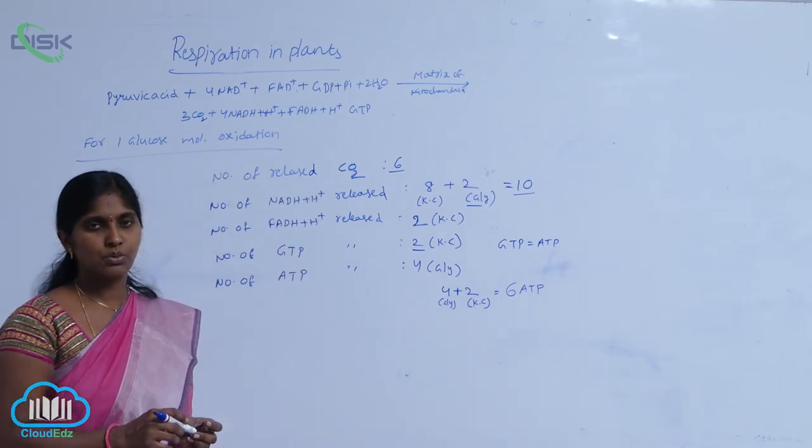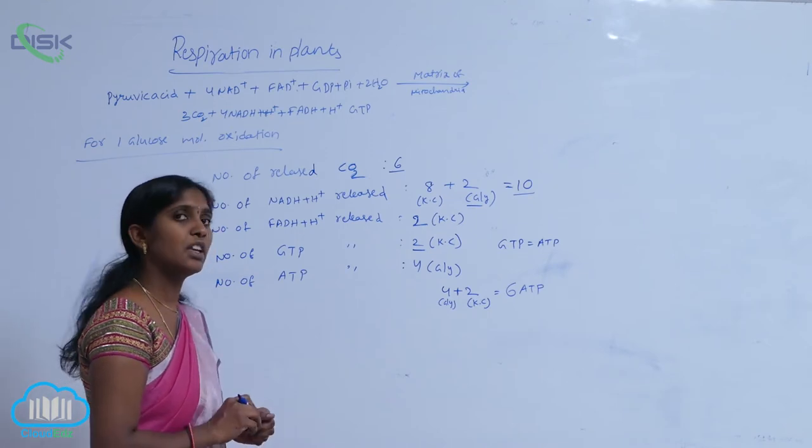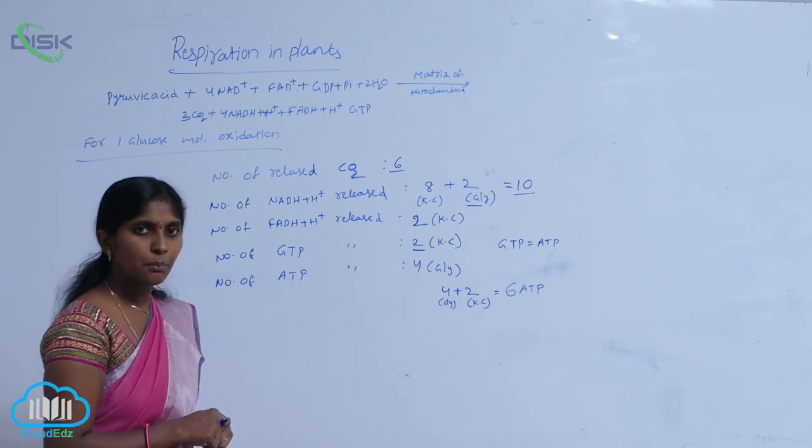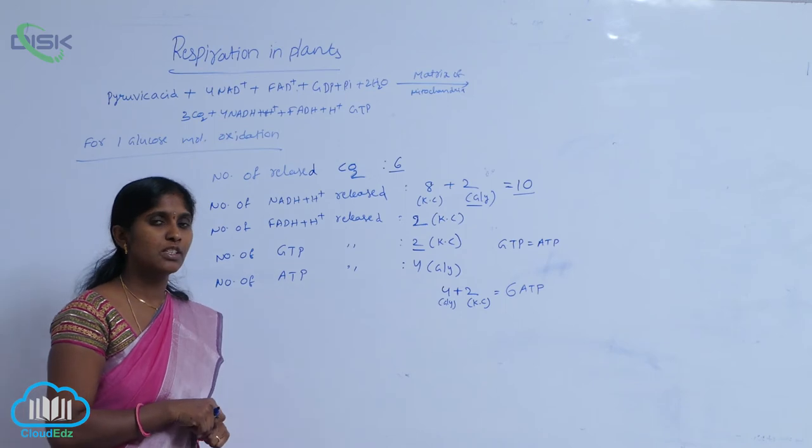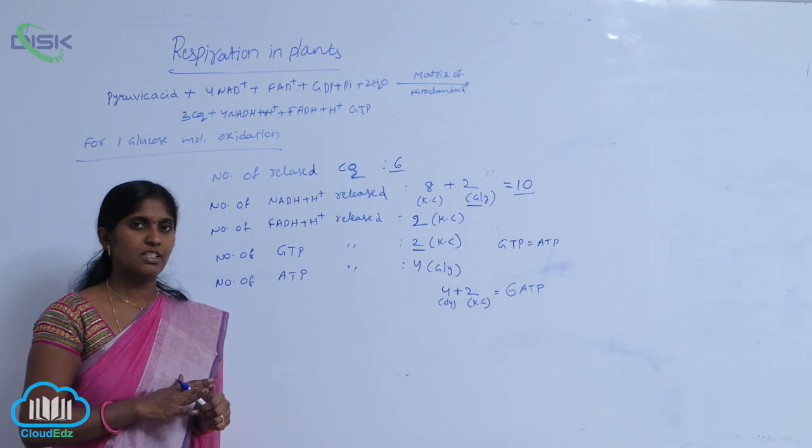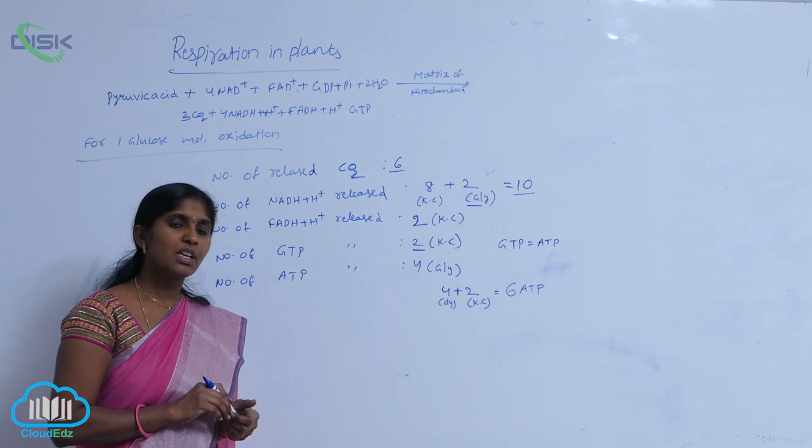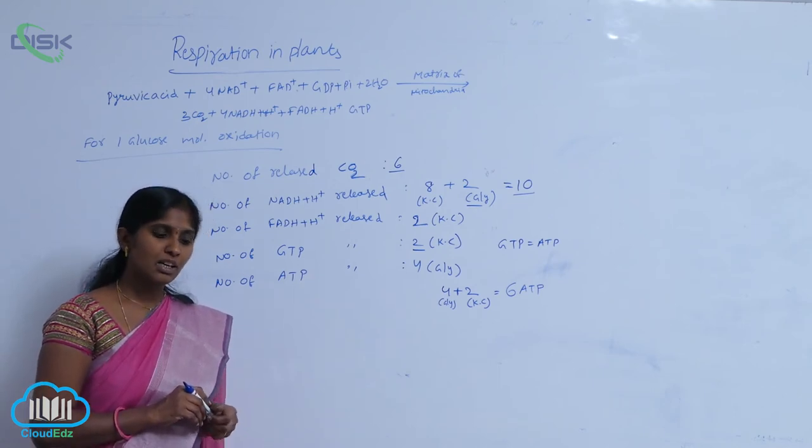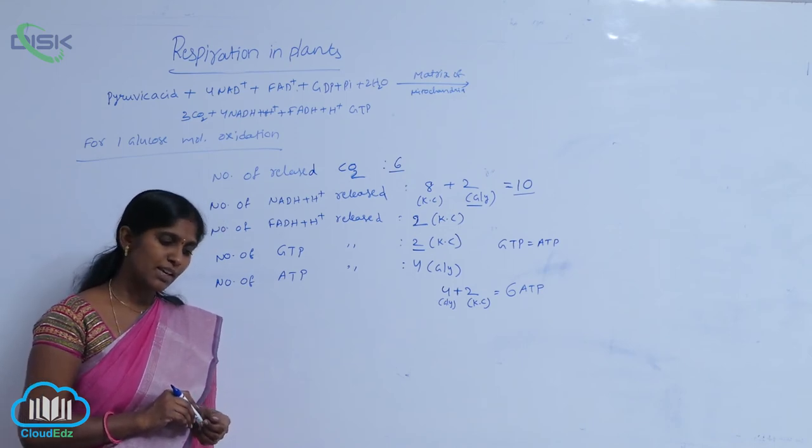The NADH2 and FADH2 oxidation leads to the production of ATP's. ATP's are energy currency, they are rich in energy. When they are cleaved, they release the energy. For production of ATP, the NADH2 as well as FADH2's enter into the electron transport system as well as oxidative phosphorylation.